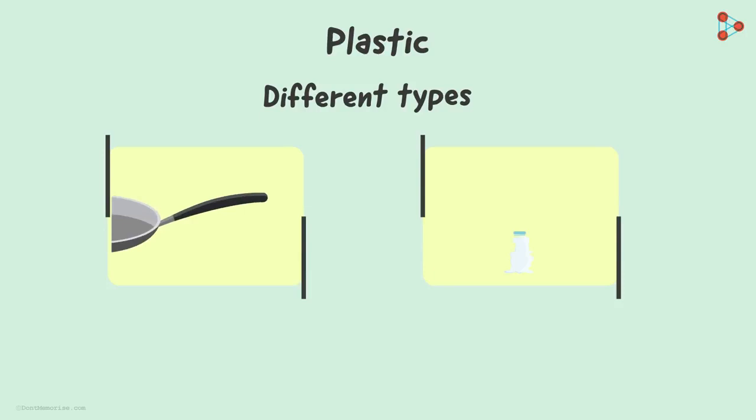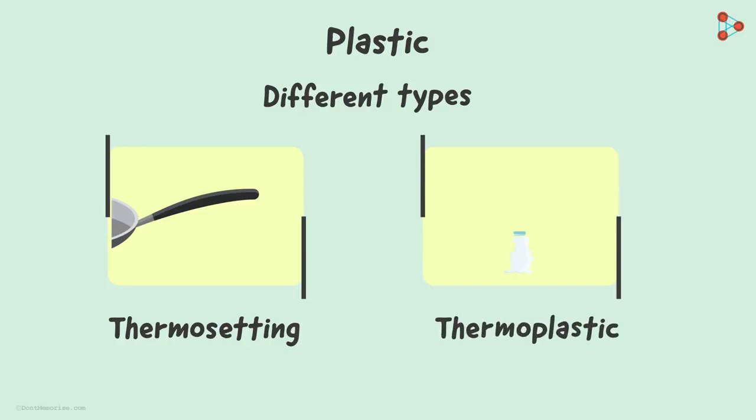The first one which makes up the handle is called the thermosetting plastic, while the other type is referred to as the thermoplastic. Looking at the incidence of heating, can you tell me the basic difference between the two? That's correct.